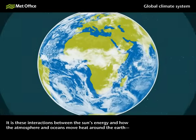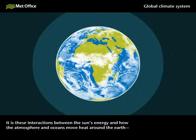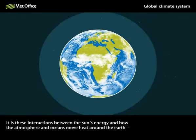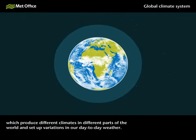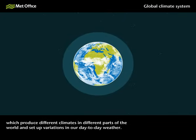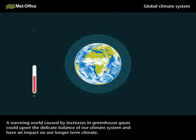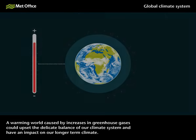It is these interactions between the Sun's energy and how the atmosphere and the oceans move heat around the Earth which produce different climates in different parts of the world and set up variations in our day-to-day weather. A warming world caused by increases in greenhouse gases could upset the delicate balance of our climate system and have an impact on our longer-term climate.